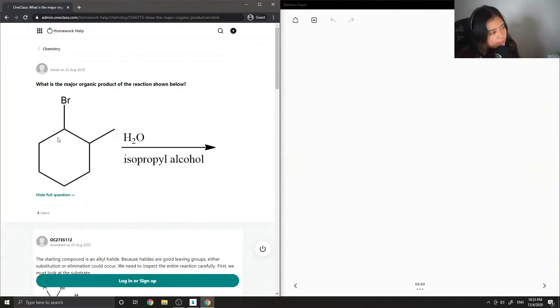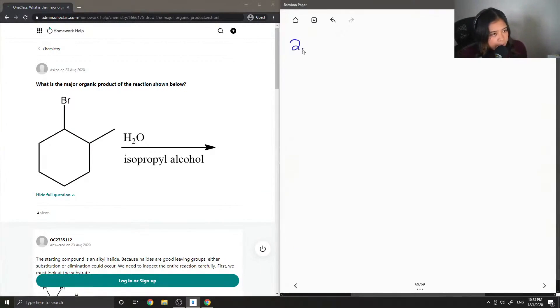What is the major organic product of the reaction shown below? So we have an alkyl halide reacting with water and isopropyl alcohol.